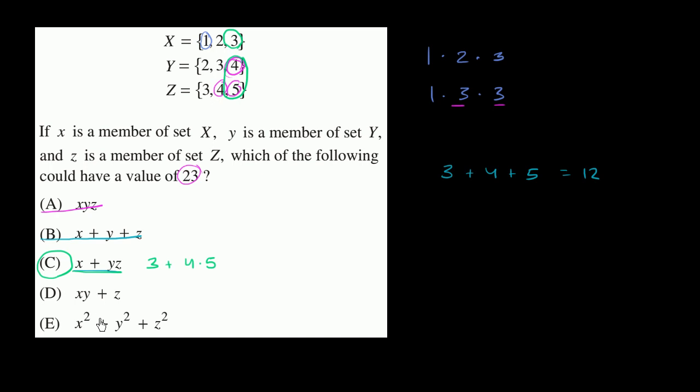But we could verify that we can't get there with these other ones. x squared plus y squared plus z squared. This one is tempting just because you could get numbers large enough, but if you play around enough, you would have trouble finding a combination that adds to 23.